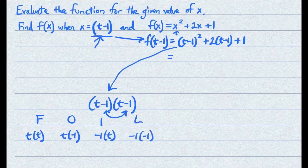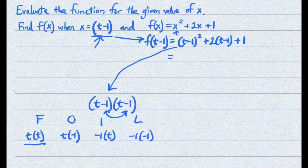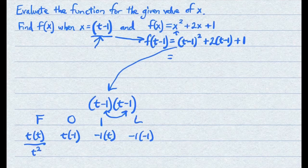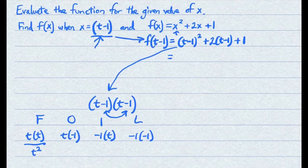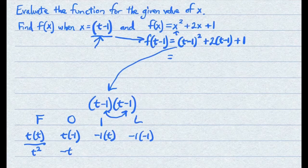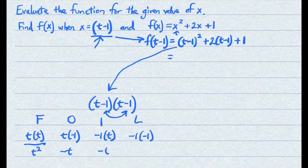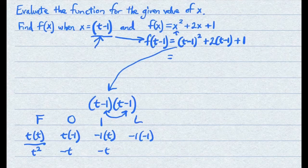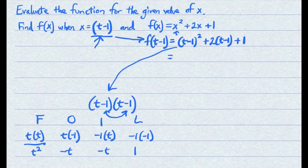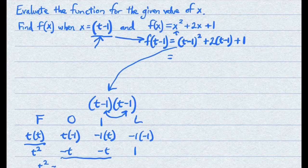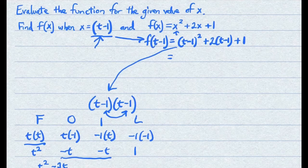When you simplify all of this, you got t times t, which is t squared. t times negative 1 is negative t. Negative 1 times t is also negative t. Negative 1 times negative 1 is positive 1. And now you can combine the two middle terms. So on the next line, you have t squared minus 2t plus 1.